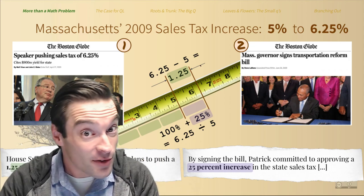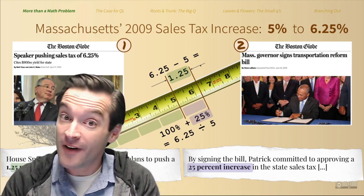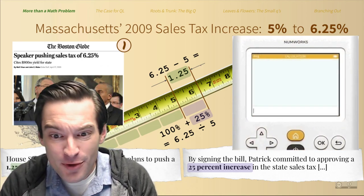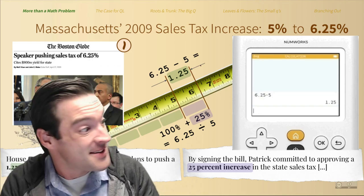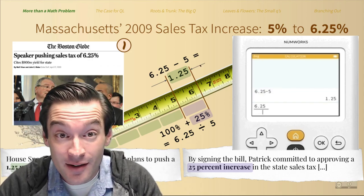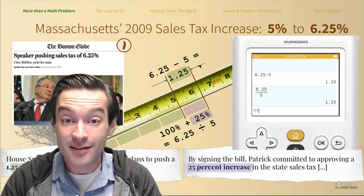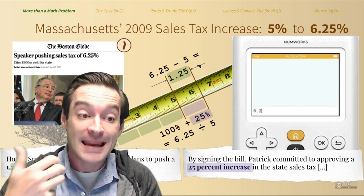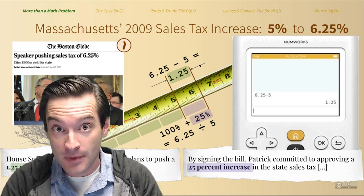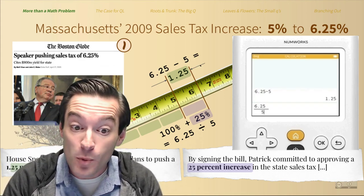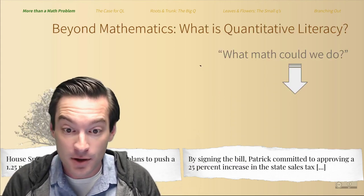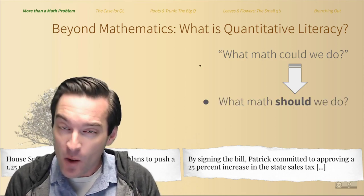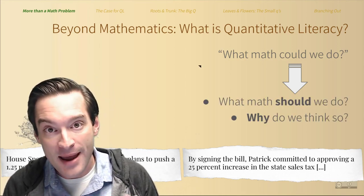So we could subtract or we could divide. That choice is meaningful. But wait a minute — both of those math problems have exactly the same answer on my calculator. Why are they so different when they make it onto the page? What's happening to meaning on its trip out of and then back into context? Quantitative literacy is what happens when, instead of asking what math could we do, we ask: what math should we do? Why do we think so? What are the impacts of that choice?